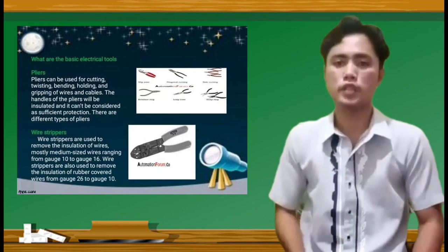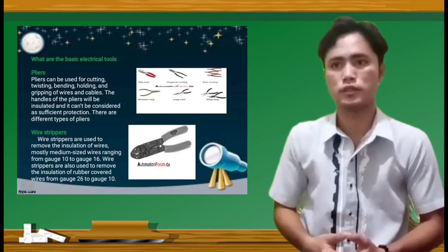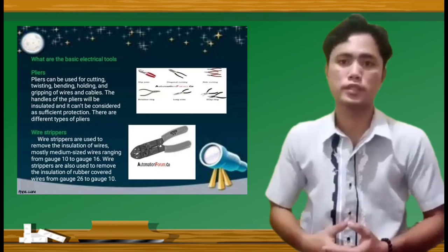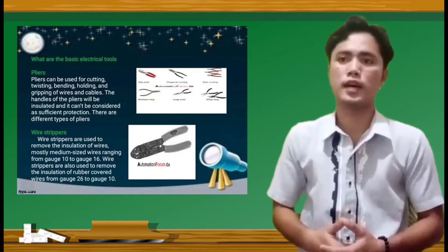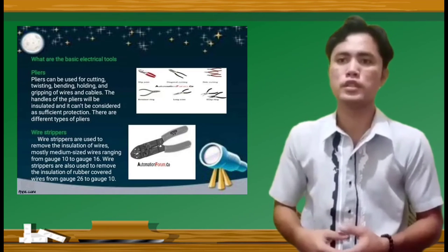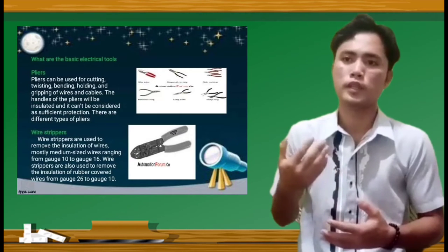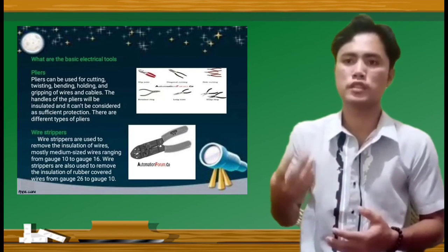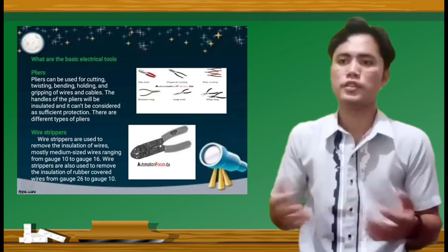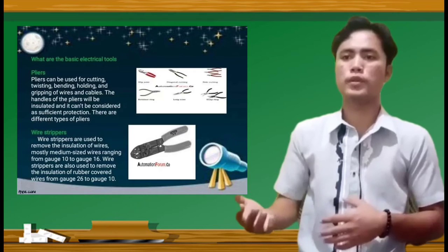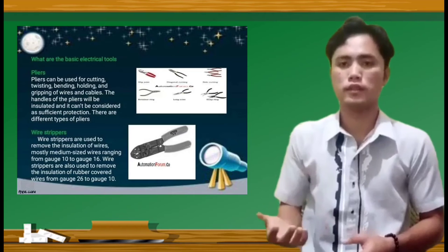And the second one is wire stripper. Wire strippers are used to remove the insulation of wires, mostly medium size wires ranging from gauge 10 to gauge 16. Wire strippers are also used to remove the insulation of rubber covered wires from gauge 26 to gauge 10.